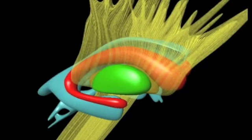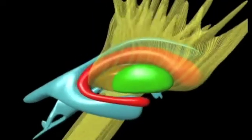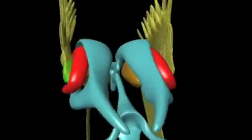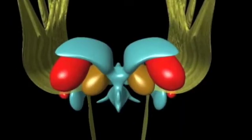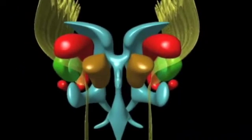The putamen is located lateral to the globus pallidus. The caudate nucleus and the putamen are of common embryologic origin. They are separated by the internal capsule.